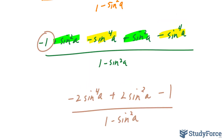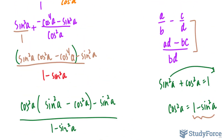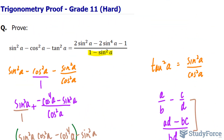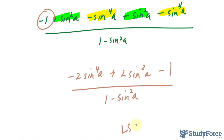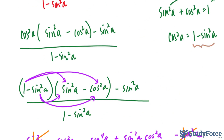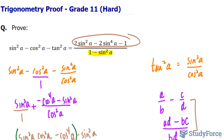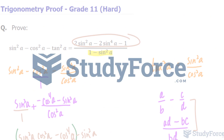As you can tell, this is now identical to what we have on the right side. Therefore, the left side is equal to the right side and we have proven this identity. And there you have it — that is how to prove trigonometric identities.